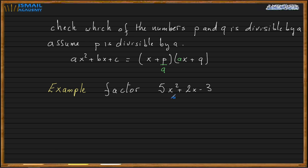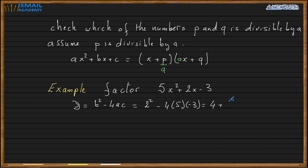Before doing any steps, let me check the discriminant to see if it is a perfect square or not. So b squared minus 4AC equals 2 squared minus 4 times 5 times negative 3, which is 4 plus 60, which is 64. And 64 is 8 squared, so it's a perfect square, which means I can factor using the AC method.